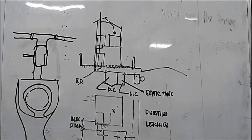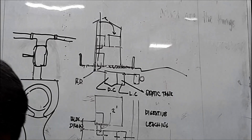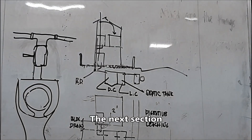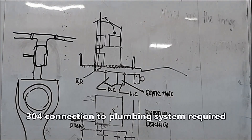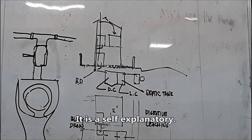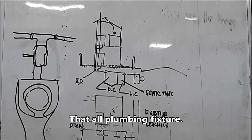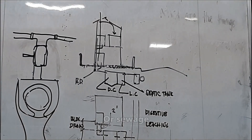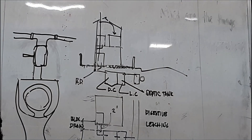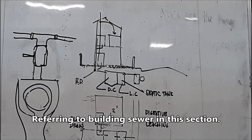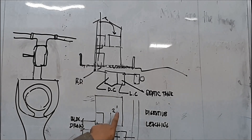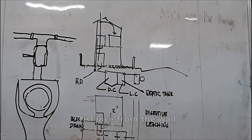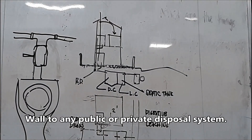Next section: 304 — Connection to Plumbing System Required. It is self-explanatory: all plumbing fixtures, drains used to receive or discharge liquid waste or sewage shall be connected properly. Next section: 305. We are required — this is the building sewer — from two feet distance from the building going to any public or private disposal system.